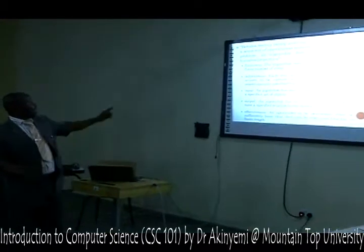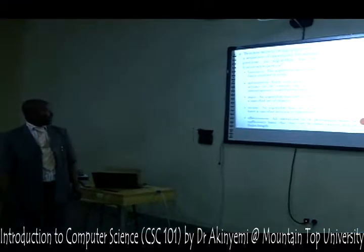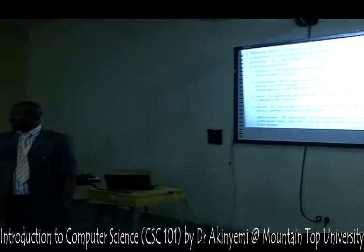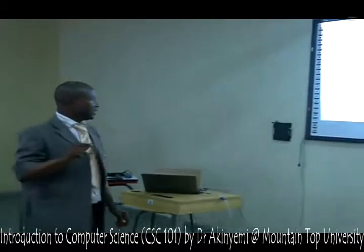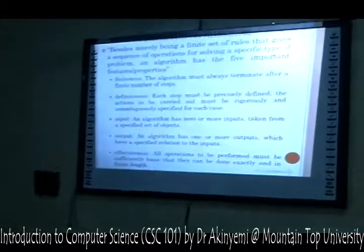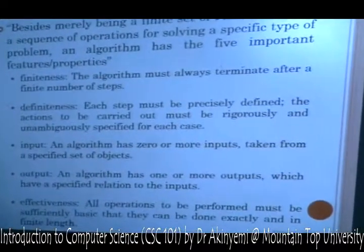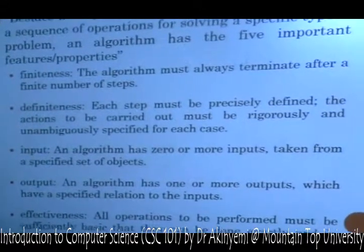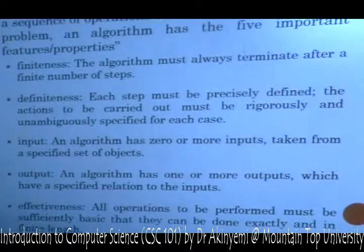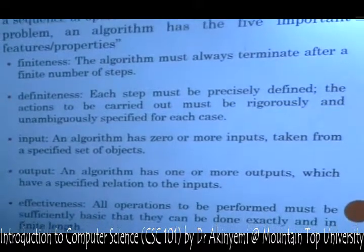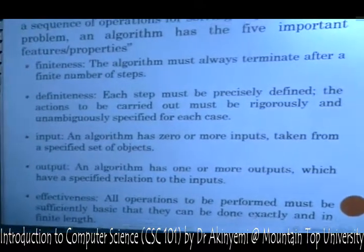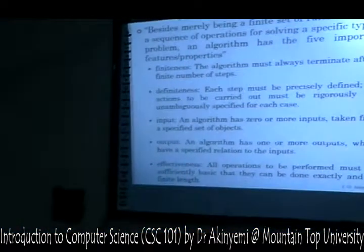The next property is definiteness. By this we mean that the steps you are following must be precisely defined — precisely, meaning an exact way in which you can do a particular operation. The actions must be unambiguous, not having different meanings. They must be clearly stated so that you can have the expected result.